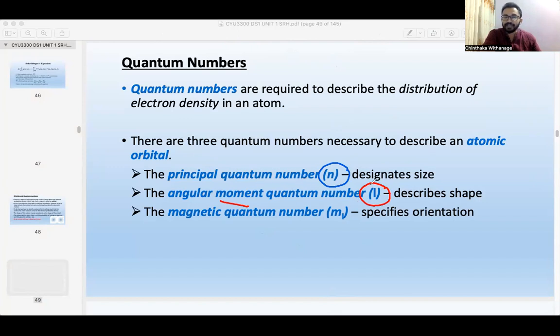The principal quantum number is on the main energy level.